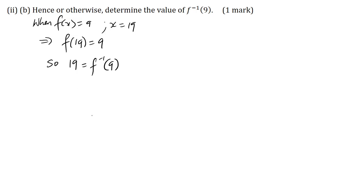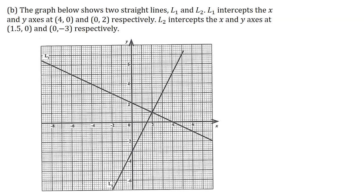Part B. The graph below shows two straight lines L1 and L2. L1 intercepts the x and y axes at 4, 0 and 0, 2 respectively. L2 intercepts the x and y axes at 1.5, 0 and 0, minus 3 respectively.